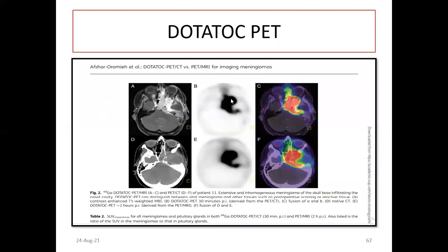If you want to delineate properly, you can take advantage of DOTATOC PET, which will help differentiate between involved bone and skull base. For extensive and homogeneous skull base meningioma including the nasal cavity, DOTATOC PET helps distinguish between vital meningioma and other tissues such as post-operative scarring and reactive tissue, using contrast-enhanced T1 MRI fusion with DOTATOC PET after 30 minutes. When there is doubt, you can take advantage of DOTATOC PET for further target delineation.